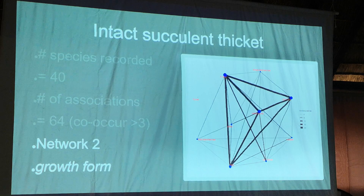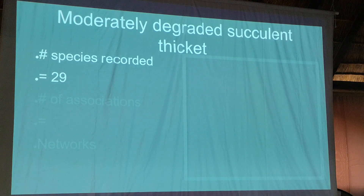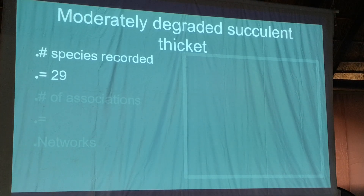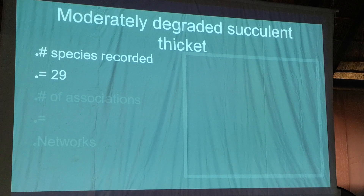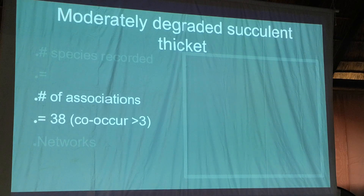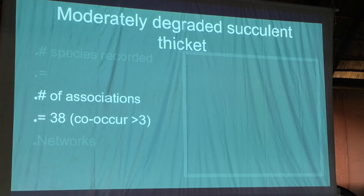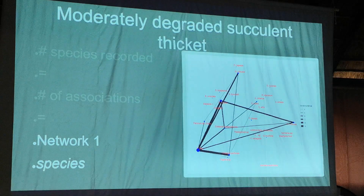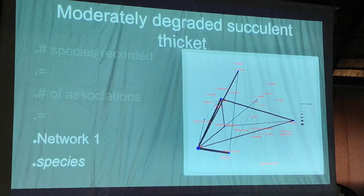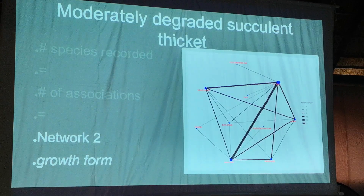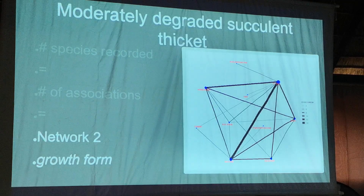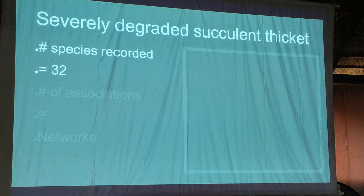In moderately degraded thicket there are only 29 species - we've lost 11 species - so there's clearly quite a rapid loss of biodiversity as degradation happens. This moderately degraded space still has a lot of recruitment and ecological processes happening with spec boom coming back, but all these other species are kind of missing. The number of associations dropped to 38, so the community processes are falling apart a little. But spec boom still has a lot of associations and remains pretty fundamental to the network.